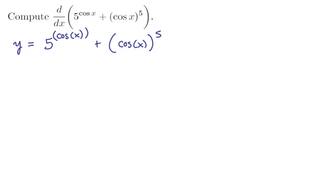Now notice that this expression right here has got variables in the exponent, which means it's really a natural logarithm in disguise. So let's make it explicit. Let's write this as e to the ln of the base times the power. So e to the ln of 5 times the cos x.